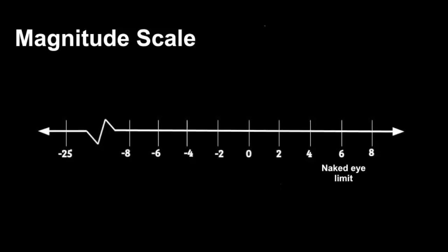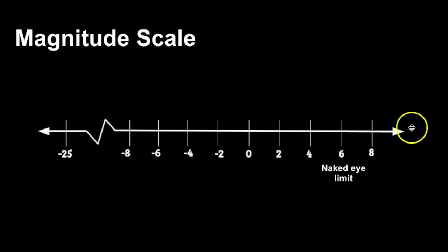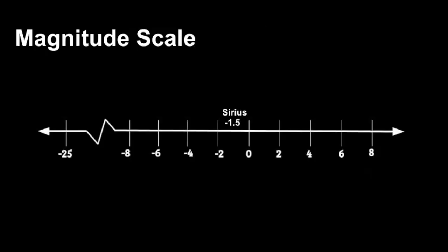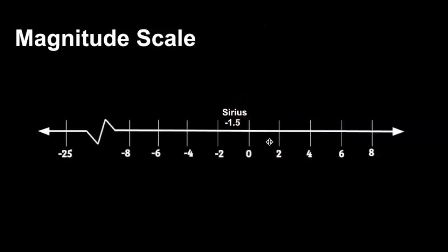The limit we can see with the naked eye is magnitude 6. Anything at magnitude 7, 8, or 9 requires magnification. Sirius, the brightest star in the night sky in the constellation Canis Major, has a magnitude of negative 1.5. So Sirius would definitely be brighter than Polaris when you compare them on this scale.